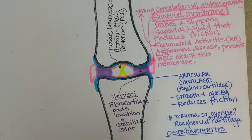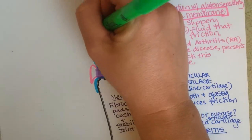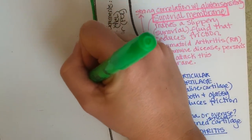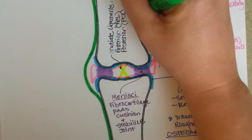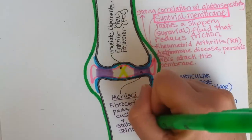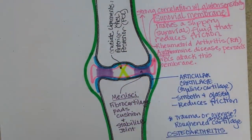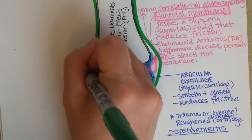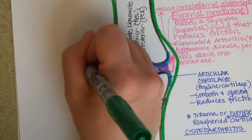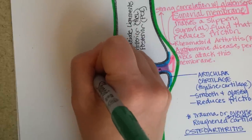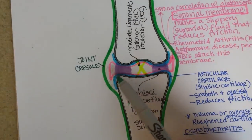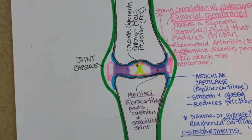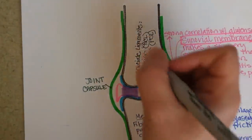Next, let's look at the joint capsule. If you recall from the anatomy of bone, the periosteum of the bone is actually continuous with the joint capsule — it's the same tissue. If someone were to need invasive surgery into a joint, this joint capsule would have to be cut through and then sewn back up again when they're done.